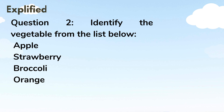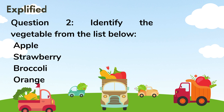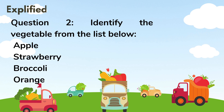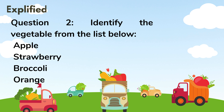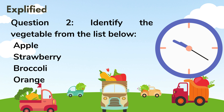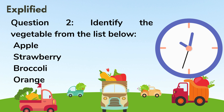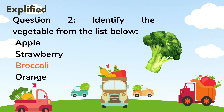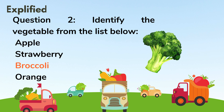Question 2: Identify the vegetable from the list below. Apple, Strawberry, Broccoli, Orange. Answer: Broccoli.